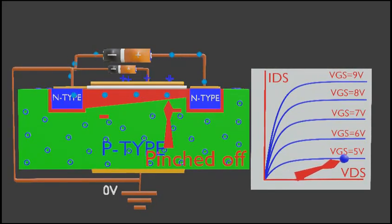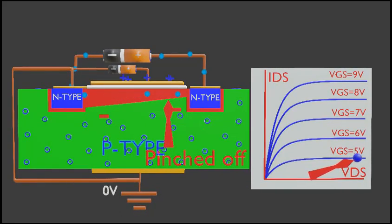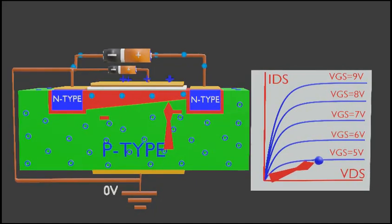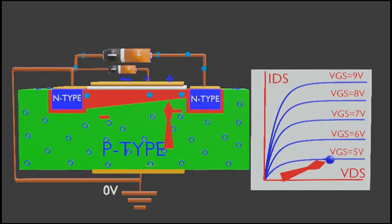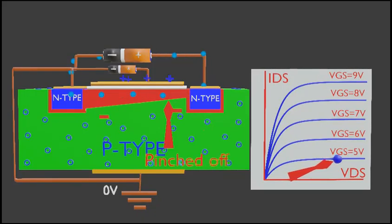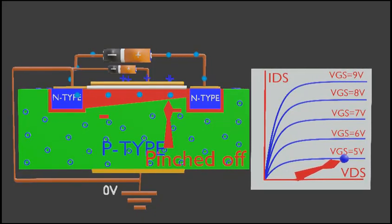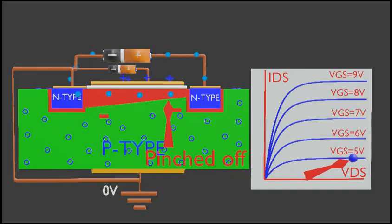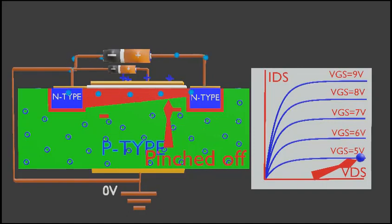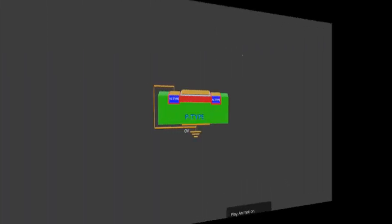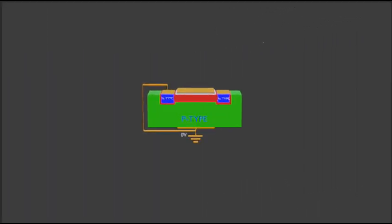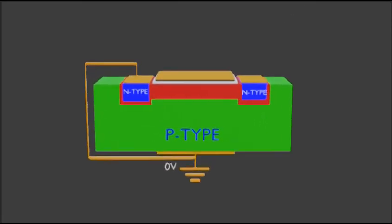If we increase the drain voltage further, the channel will be pinched off — this is called the pinching effect or saturation region. If the channel is pinched off and we further increase the drain voltage, the current will not increase anymore. To increase the current in this case, we need to increase the gate voltage, as shown in the graph. That was about enhancement type MOSFET.